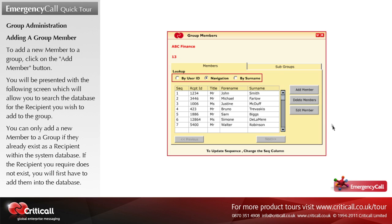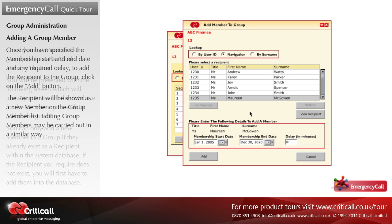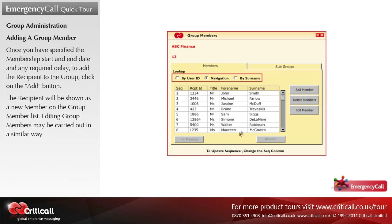To add a new member to a group, click on the add member button. You will be presented with a screen which allows you to search the database for the recipient you wish to add. You can only add a new member to a group if they already exist as a recipient within the system database; if they do not exist, you will first have to add them to the database. Once you have specified the membership start and end date and any required delay, click on the add button. The recipient will be shown as a new member on the group member list. Editing group members may be carried out in a similar way.